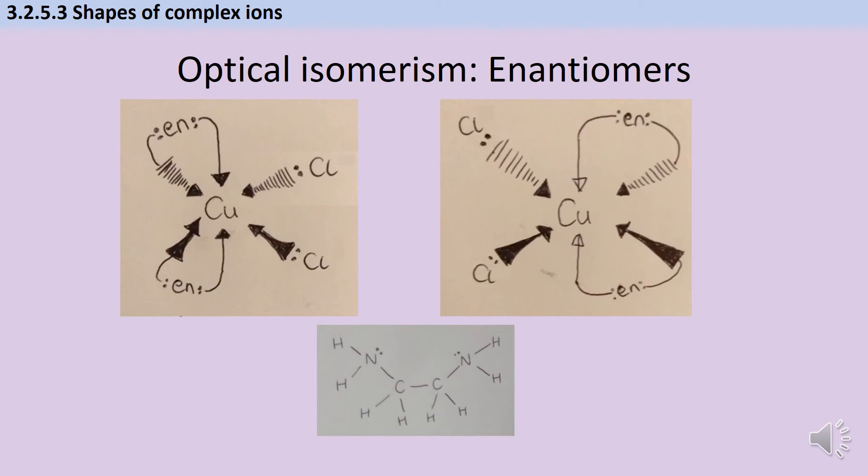And as you know from your organic chemistry, these are going to respond differently to plane polarised light in that one of them will rotate the light one way and one of them will rotate the light the other way. So here we've got two complex ions with copper, with two chloride ions, which are obviously monodentate ligands, but also two ethylenediamine ligands, which are bidentate. And therefore we can have a right-handed version and a left-handed version.